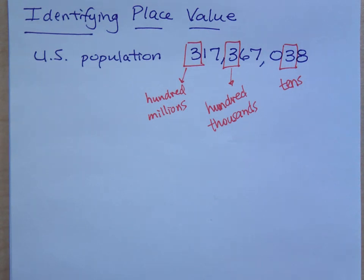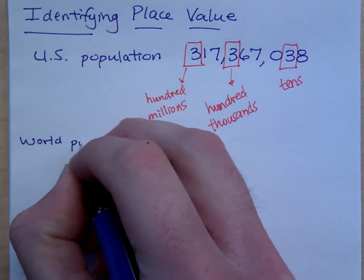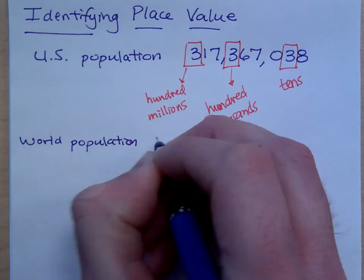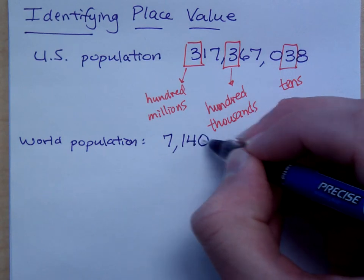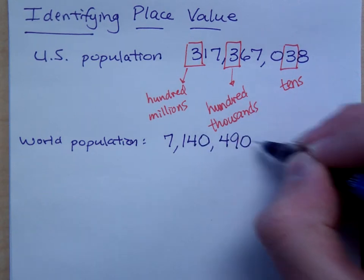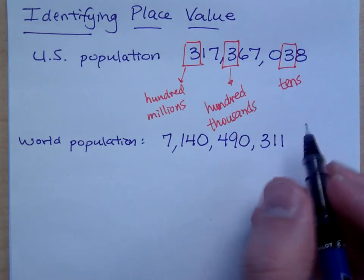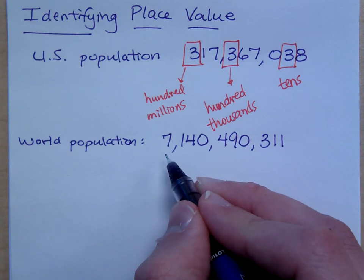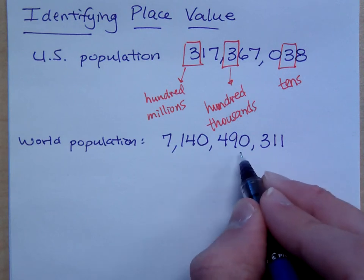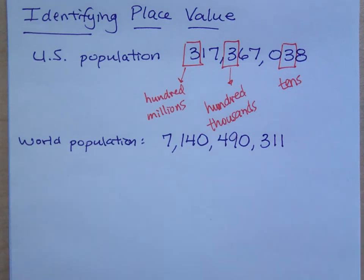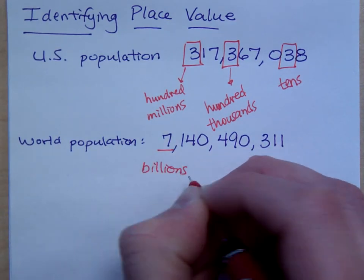Now what about the world population — 6.6 billion? According to what I saw, this is the world population. The number furthest out to the left — what spot is that in? Billions — because you have your thousands section, millions, and then we've got the seven here in the billions spot.